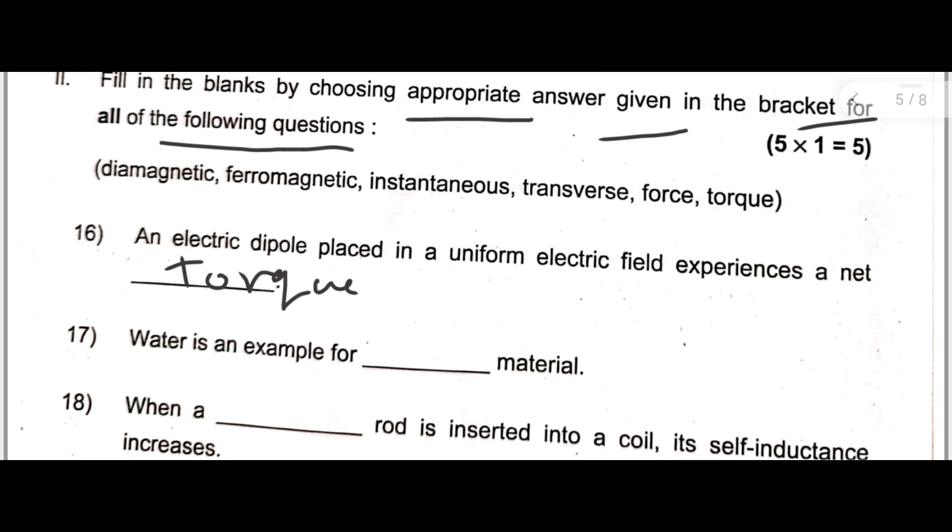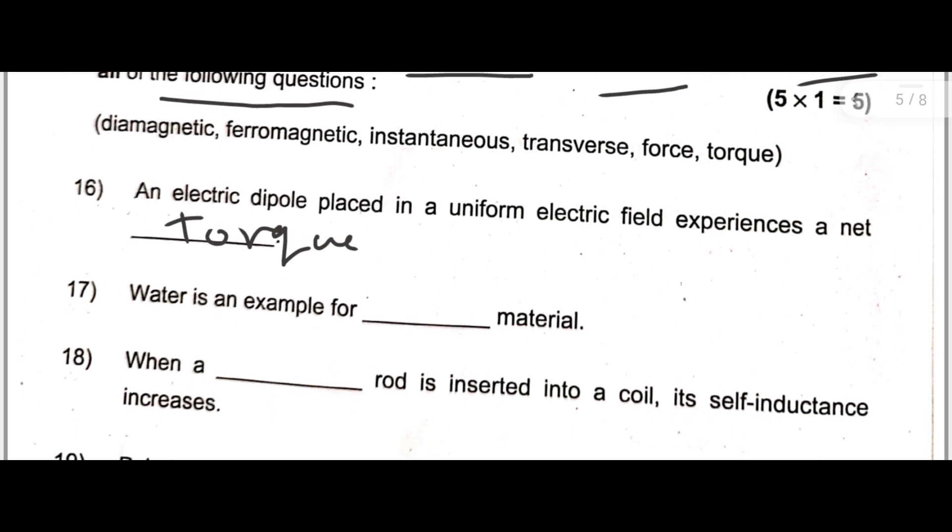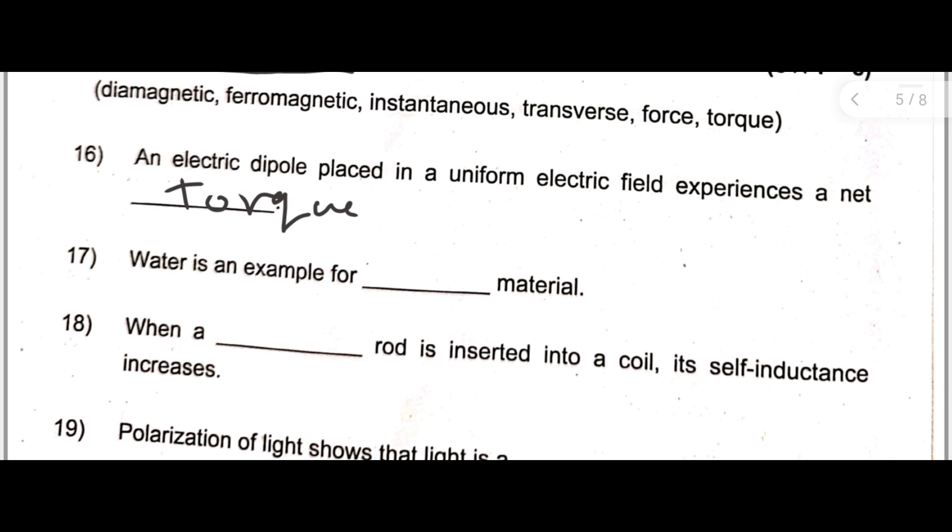Seventeenth one: Water is an example for dash material. It is a diamagnetic material.